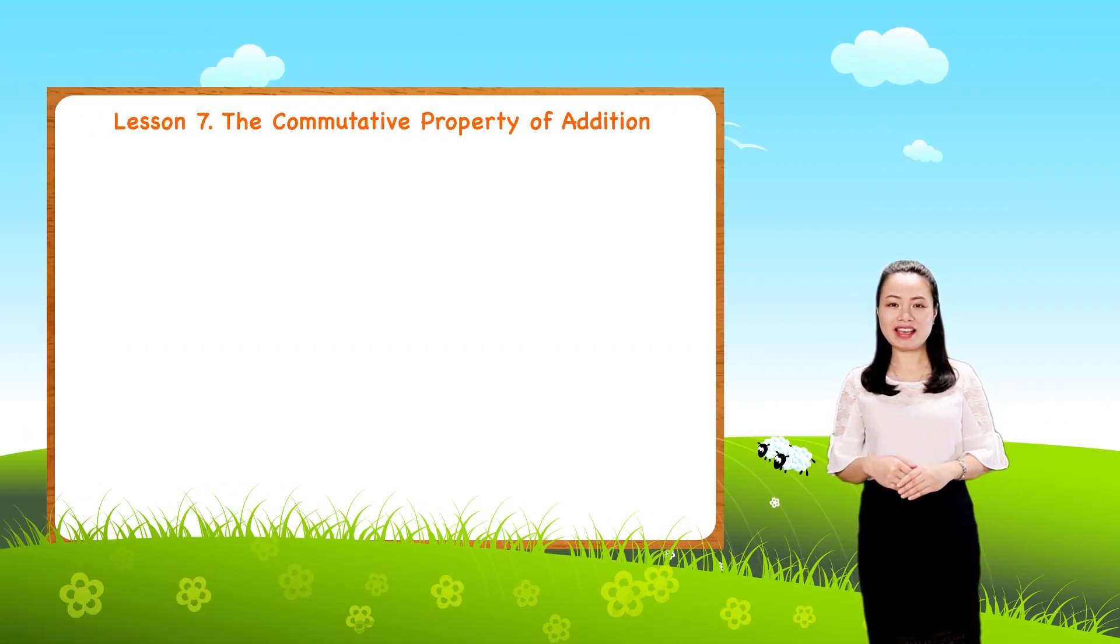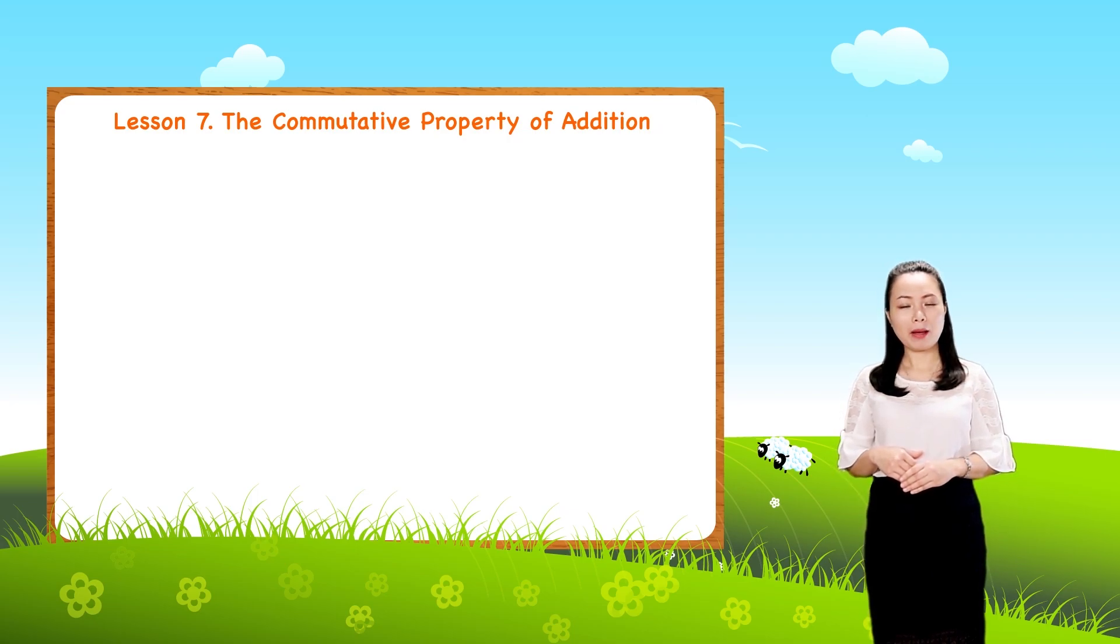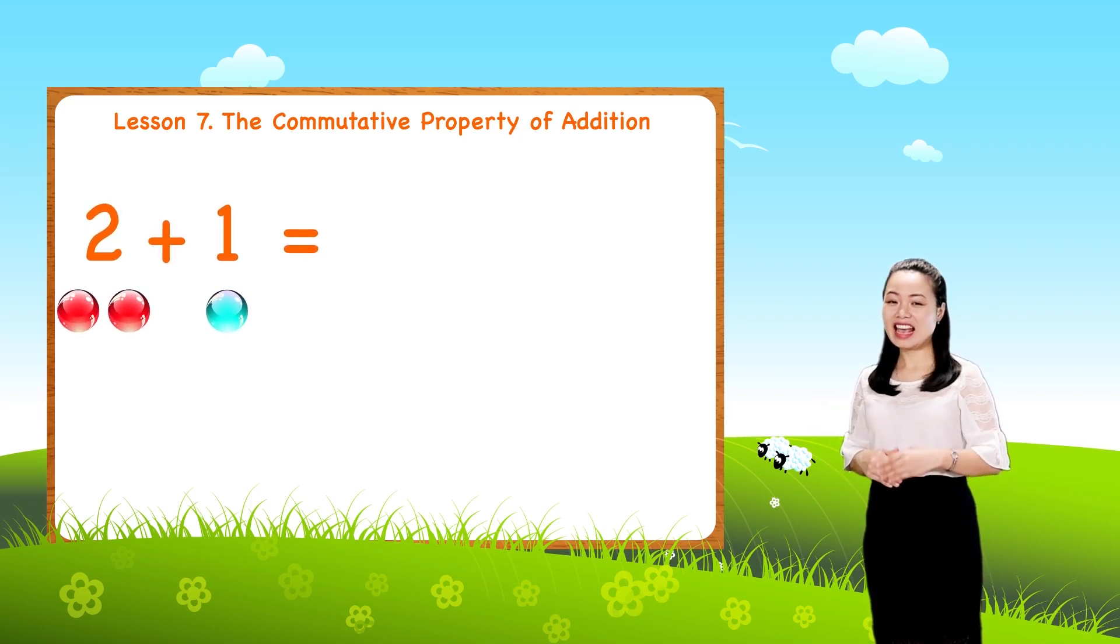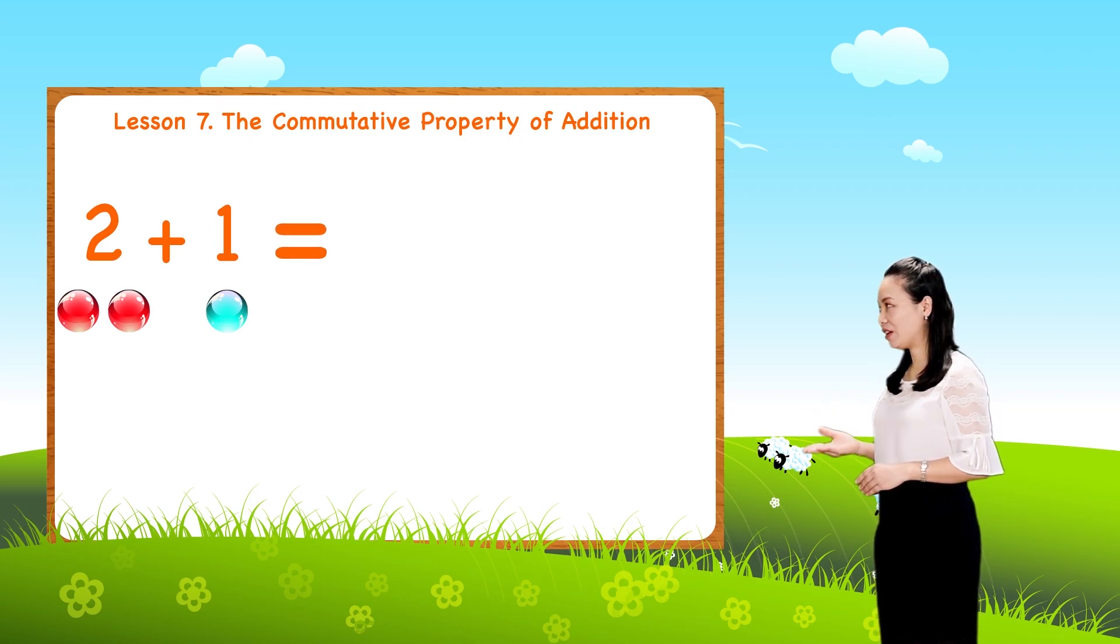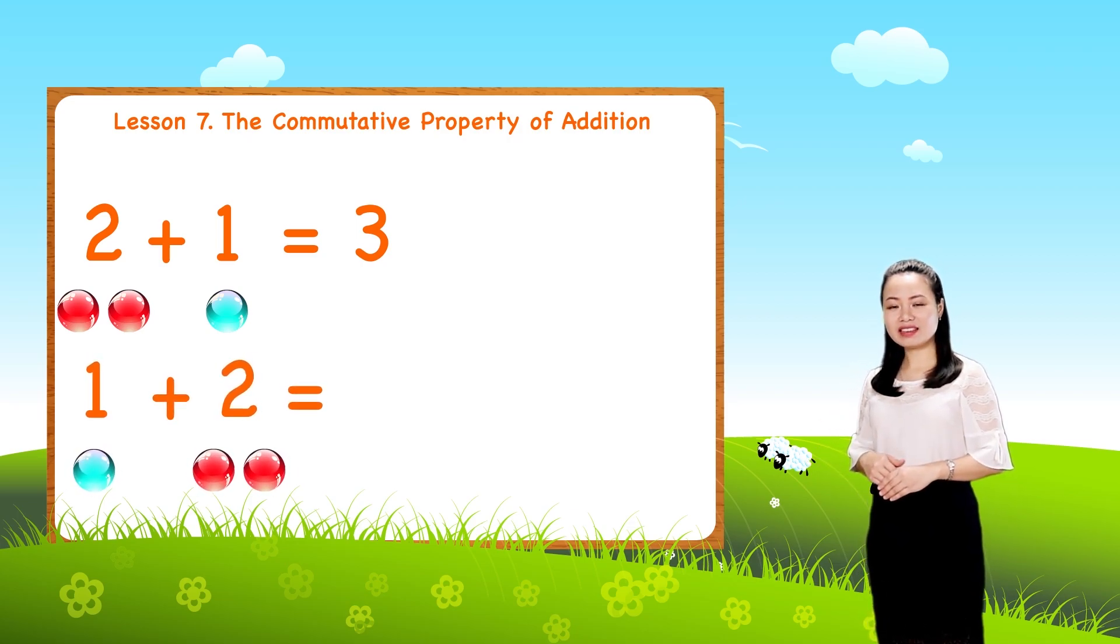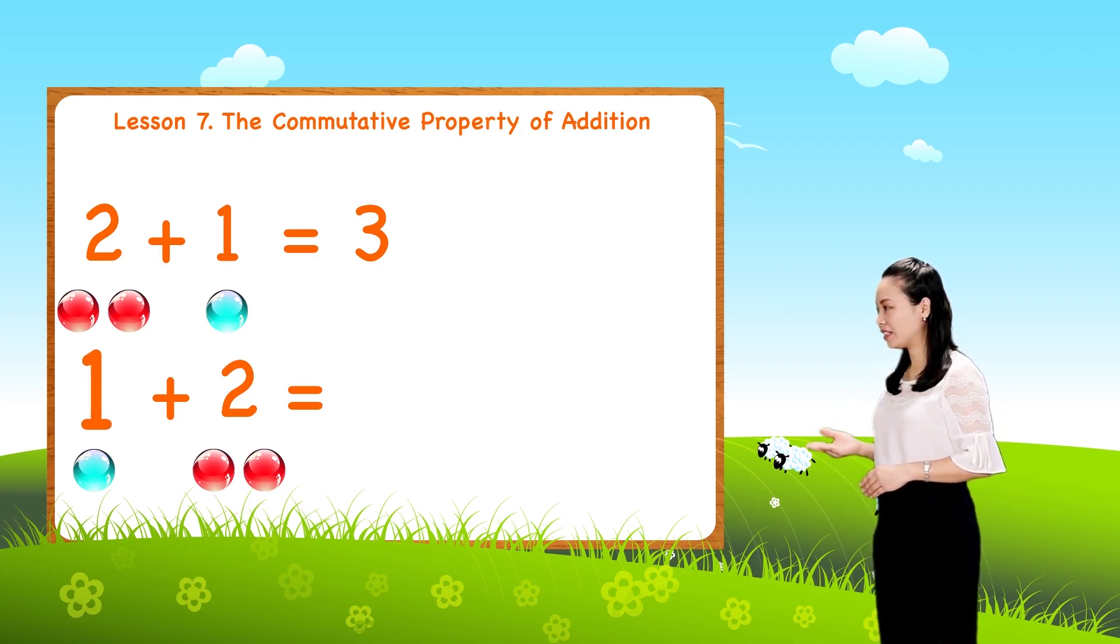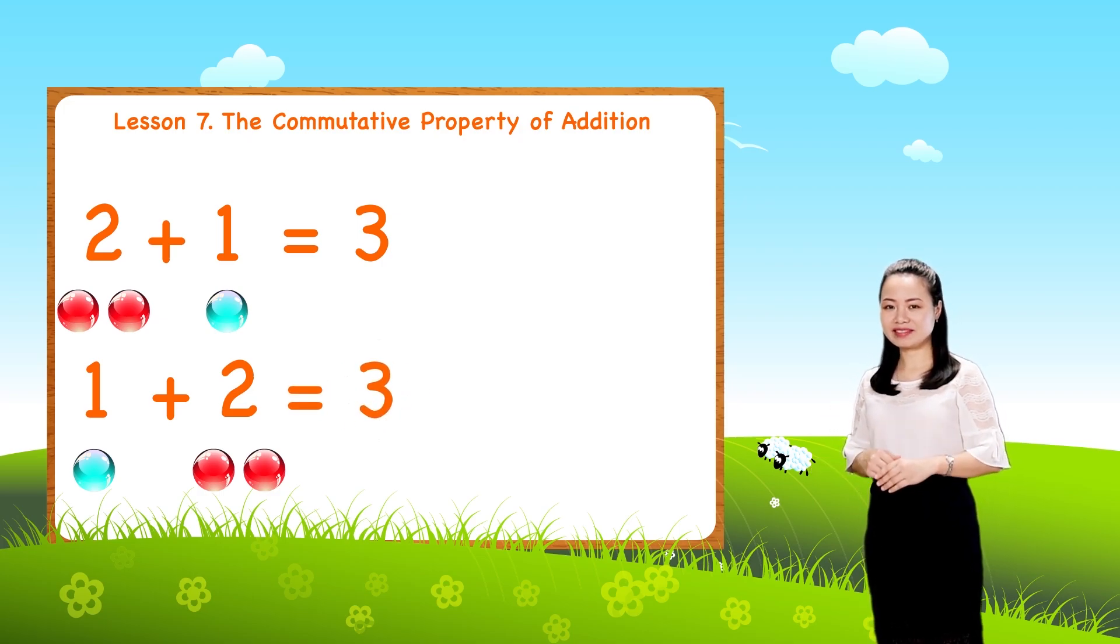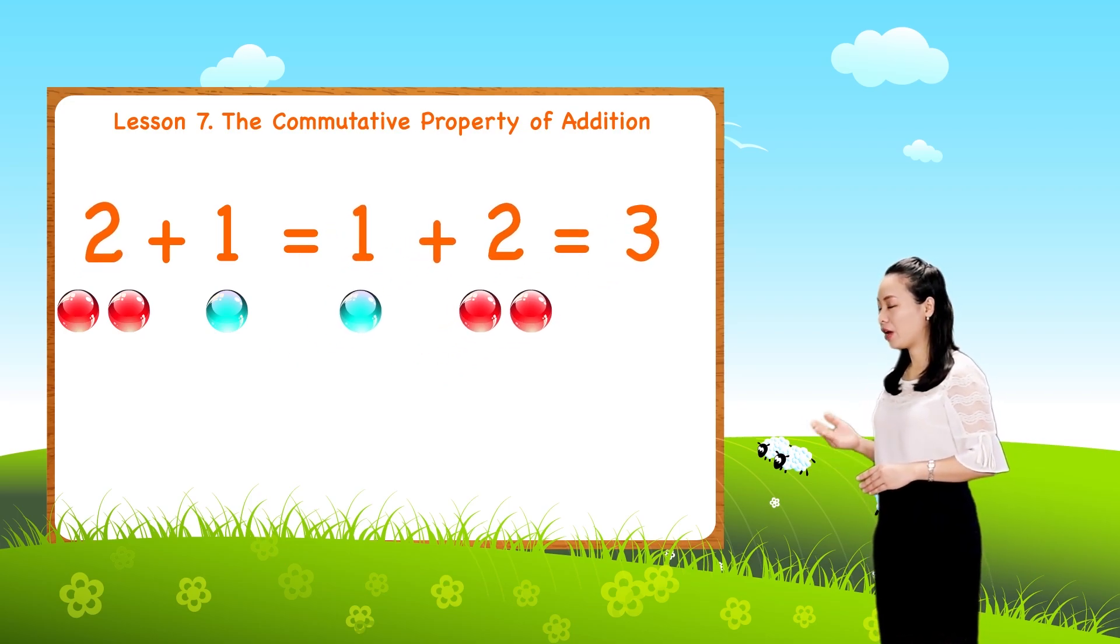Let me explain the commutative property of addition by an example. Look, you can easily find 2 + 1 = 3. Next, you can also easily find 1 + 2 = 3. So you can see 2 + 1 = 1 + 2 because they both equal 3.